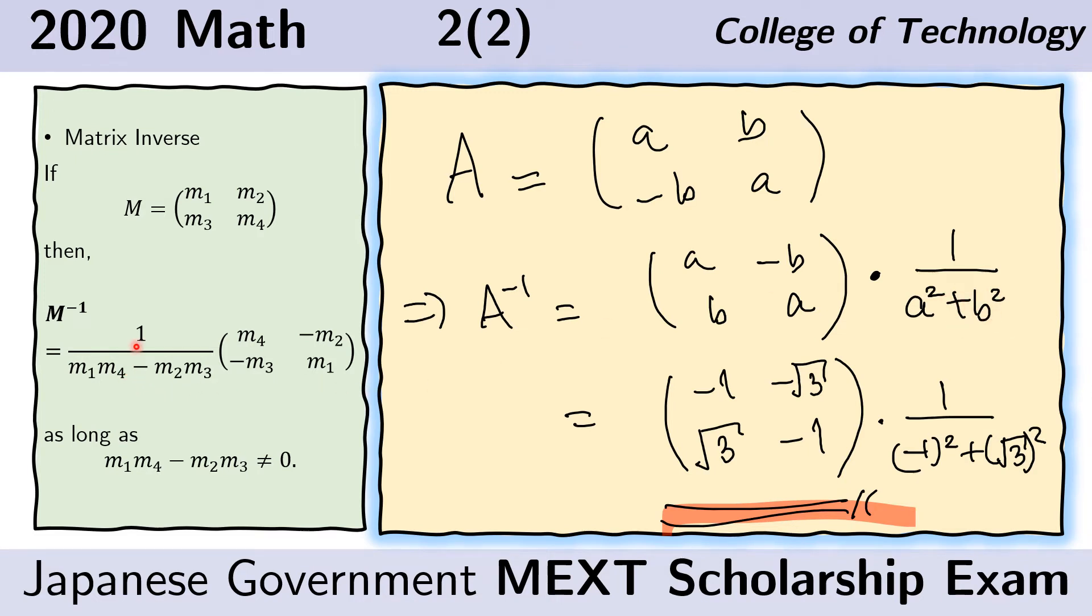This is our inverse, but from problem 2.1 we already know the values of A and B, so we just substitute them. We know that A is negative 1 and we know that B is the positive square root of 3, so we plug them in here and here.